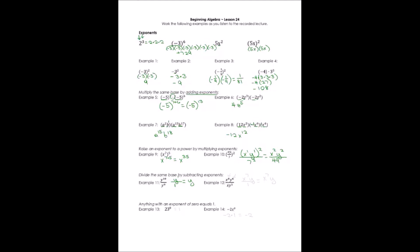Let's look at example 12. We subtract the exponents: x to the 8th over x to the 1st gives us x to the 8 minus 1, which is x to the 7th, left in the numerator. For the y variable: y to the 6th over y to the 5th gives y to the 6 minus 5, which is y to the 1, or just y, also left in the numerator. The denominator has nothing left — it's just 1. So our final answer is x to the power of 7 times y.